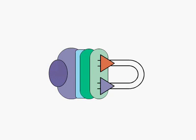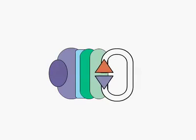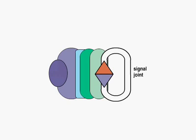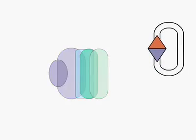These RSS ends are joined, forming what is called the signal joint, to create a closed circle of DNA that plays no further role in the recombination process.